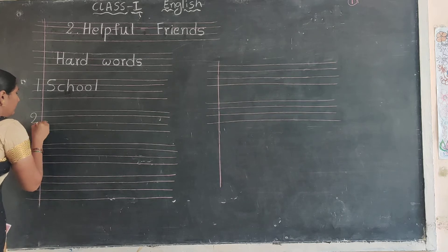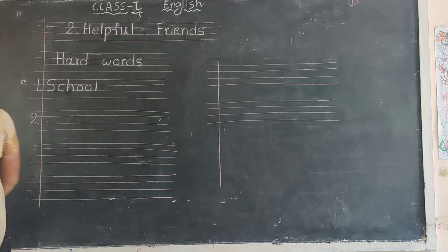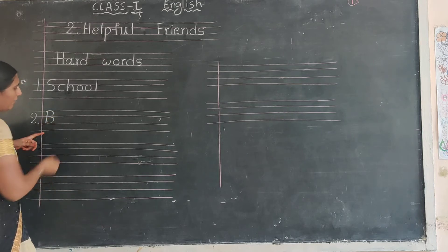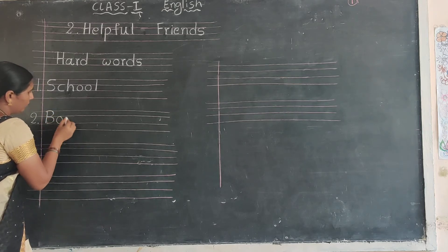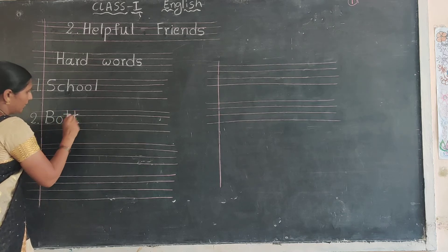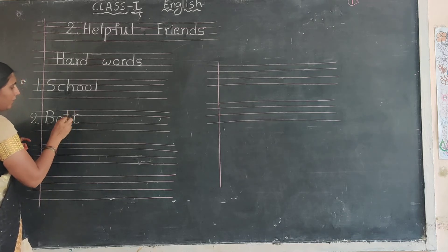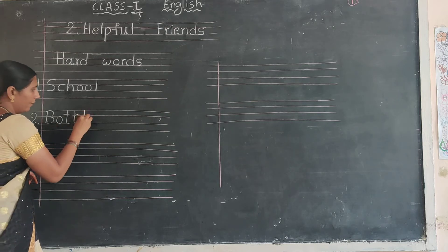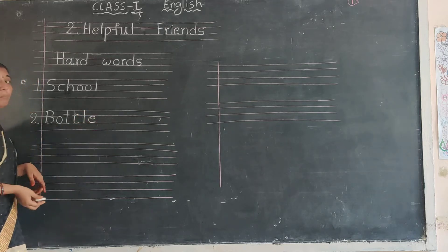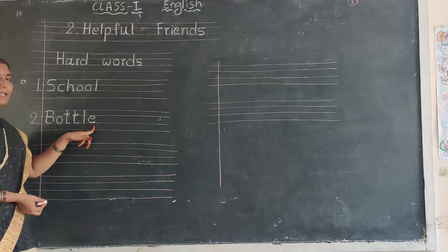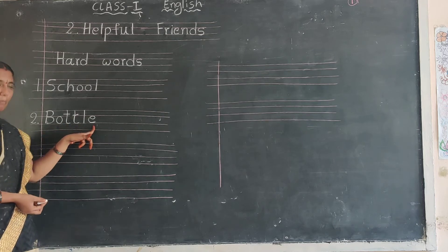Come to next slide. Number two in the margin. Capital letter B. B-O-T-T-L-E. Bottle. B-O-T-T-L-E. Bottle.